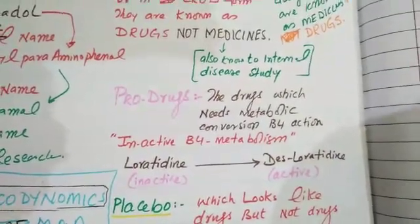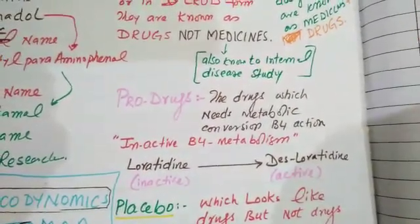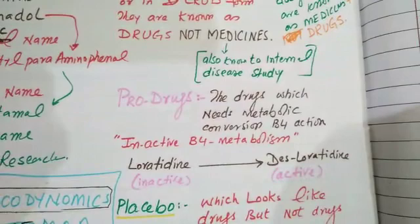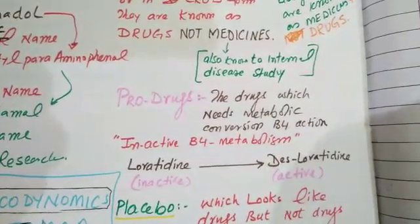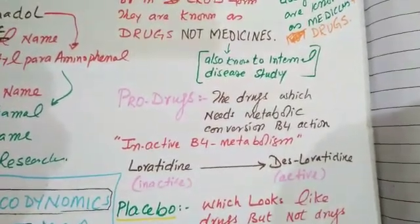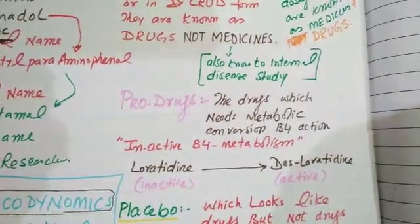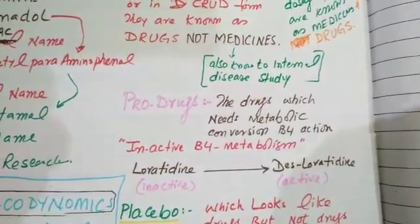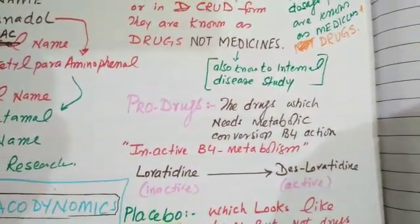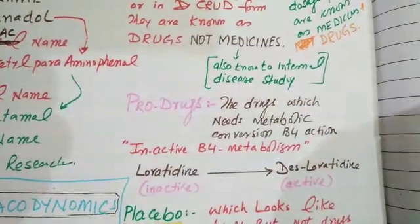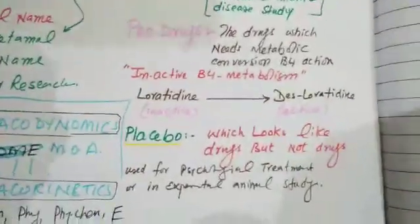For example, acyclovir is converted into acyclovir monophosphate, which is then converted into acyclovir biphosphate and then triphosphate. Now, acyclovir triphosphate is the active antiviral form. So these are known as pro-drugs.